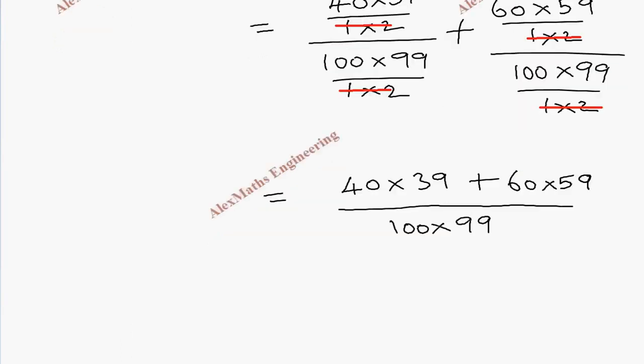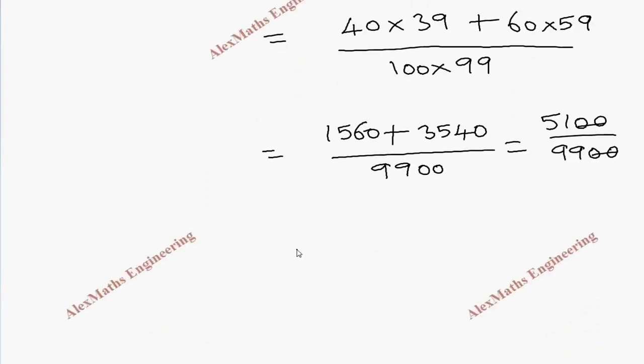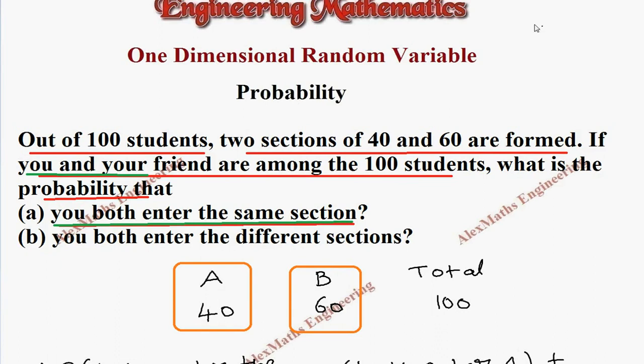Coming to the calculation part, the product of 40 into 39 is 1560 plus 60 into 59 is 3540, whole divided by 9900. You can add the numerator. It is 5100 divided by 9900. You can cancel two zeros, then with the three table, in the numerator it is 17 and denominator is 33.